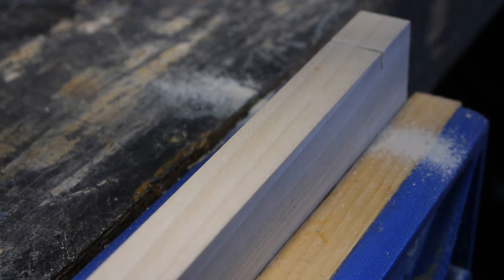If you had to make 100 tenons, you'd probably want to use your table saw. This is a quick way to get started in woodworking if you don't have those tools yet.